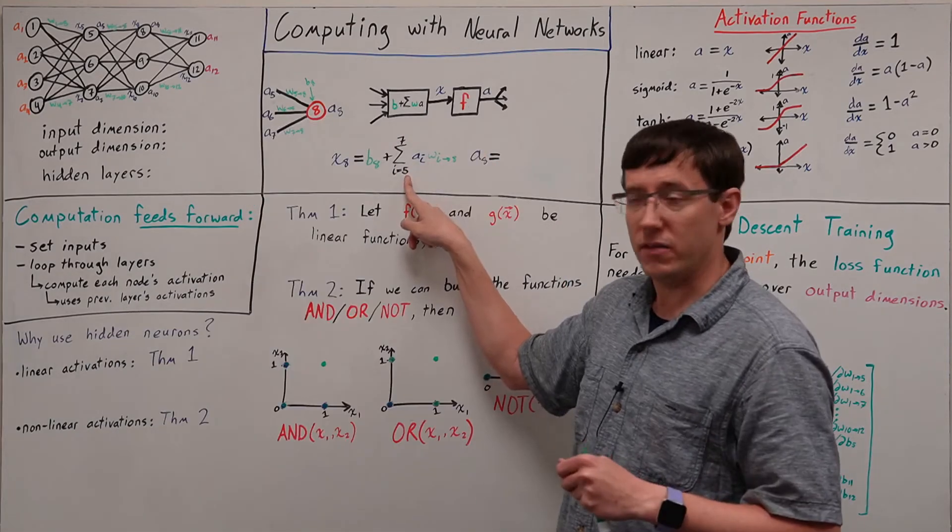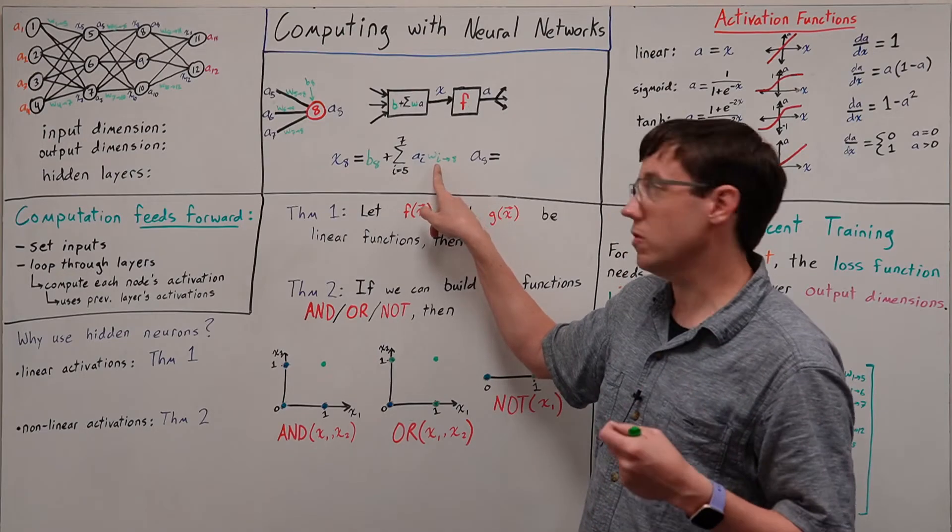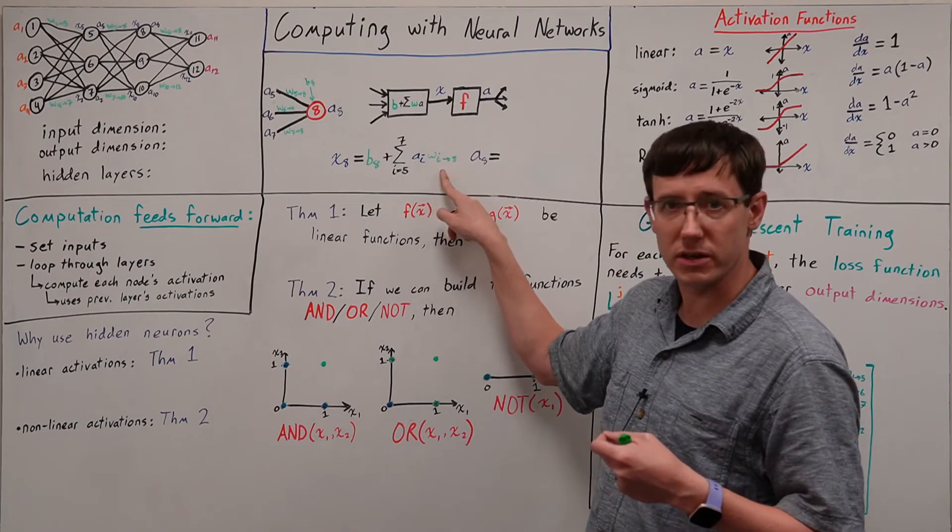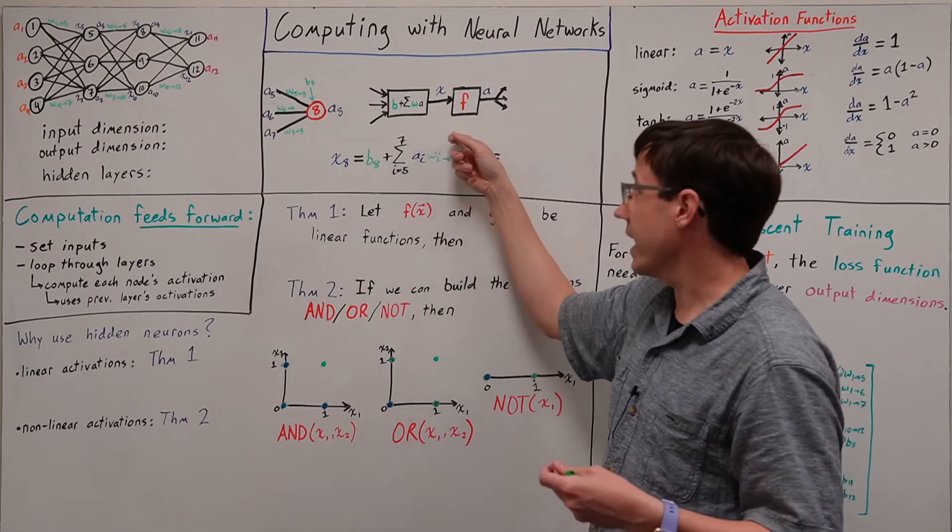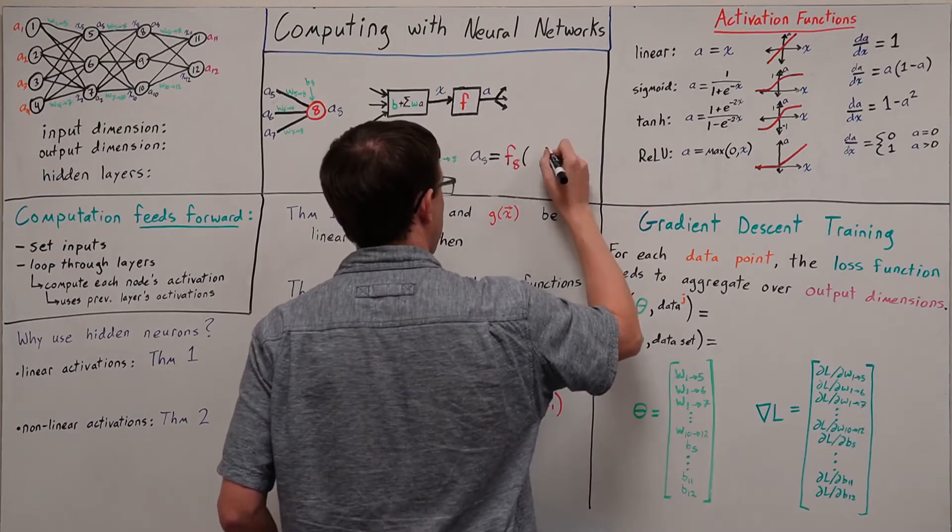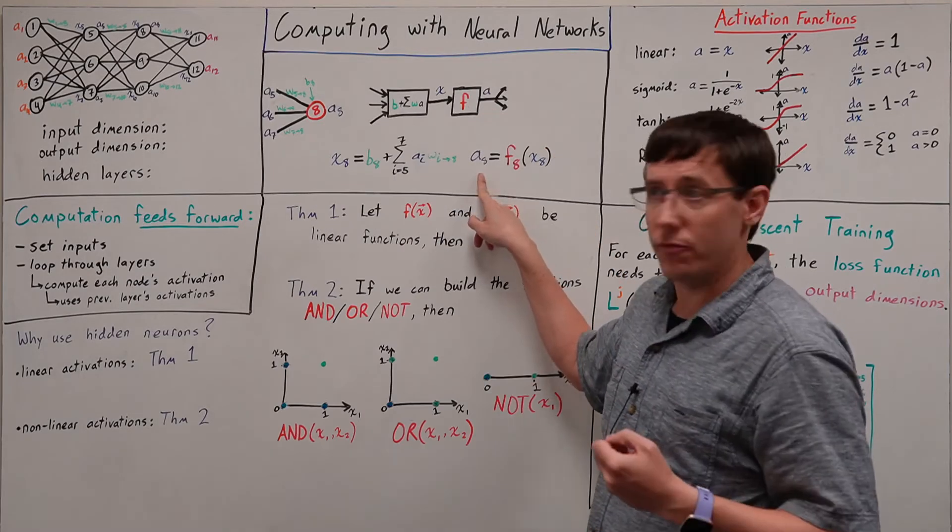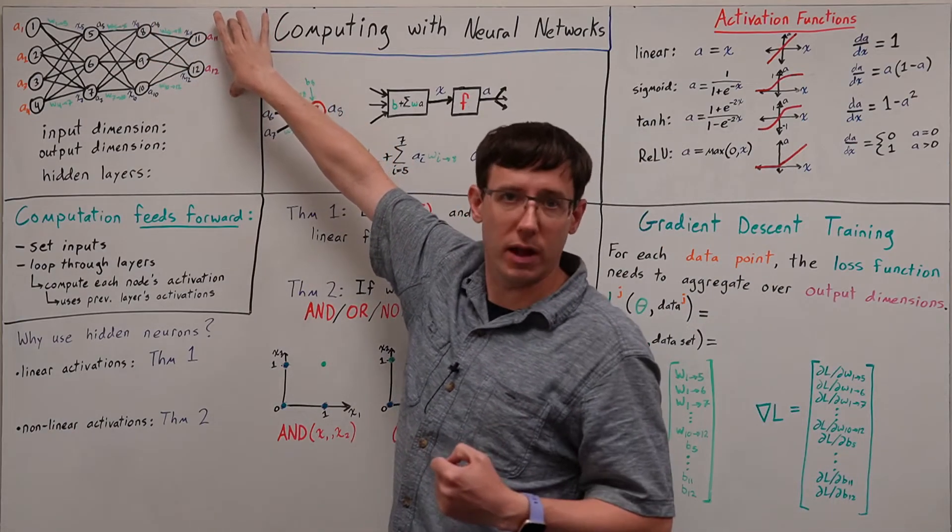So our sum is over activations 5, 6, and 7 times respectively the weights from 5 to 8, 6 to 8, and 7 to 8. Then, as always, that weighted sum of inputs is passed through the activation function for node 8. And then this output from neuron 8 is fed in as one of the inputs to nodes 11 and 12.